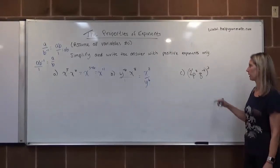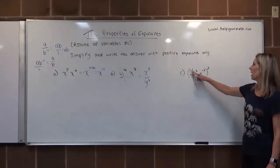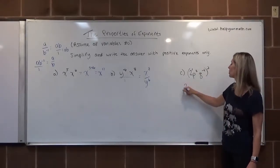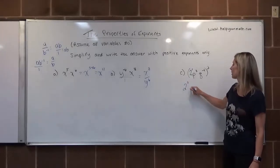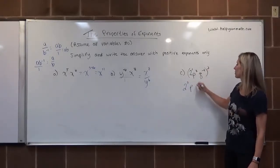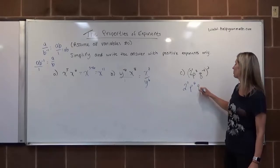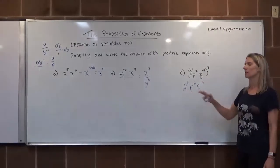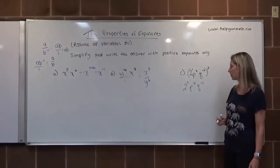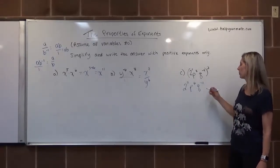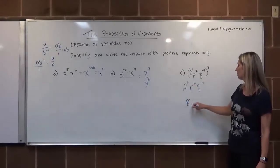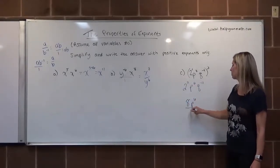When we distribute, that's power to a power, which uses multiplication. So: 2 to the 1 times 3 is 2 cubed; p to the 2 times 3 is p to the 6th; and q to the negative 4 times 3 is q to the negative 12th. We clean this up: 2 cubed is 8, and q to the negative 12th becomes positive in the denominator. Final answer: 8p to the 6th over q to the 12th.